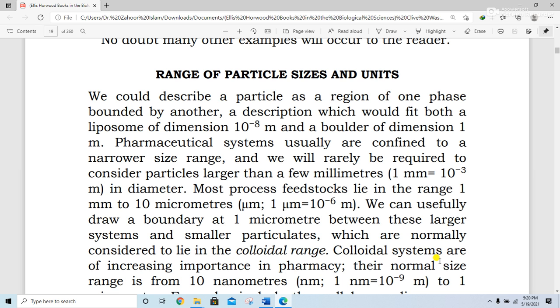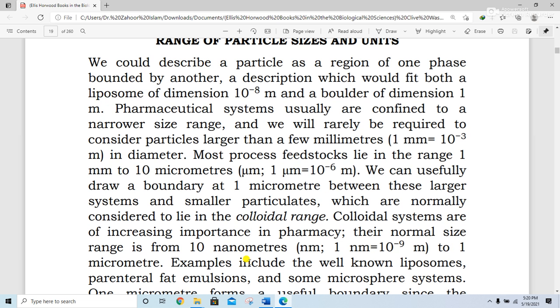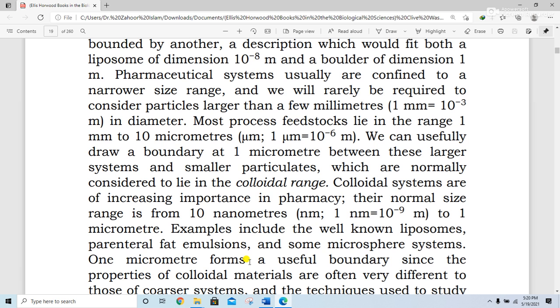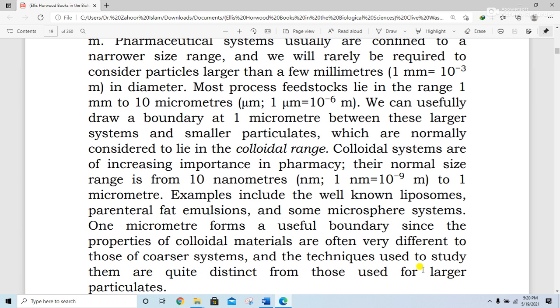Colloidal systems are of increasing importance in pharmacy. Their normal size range is from 10 nanometers—1 nanometer equals 10^-9 meters—to 1 micrometer. Examples include the well-known liposomes, parenteral fat emulsions, and some microsphere systems. One micrometer forms a useful boundary since the properties of colloidal materials are often very different from those of coarser systems, and the techniques used to study them are quite distinct from those used for larger particulates.